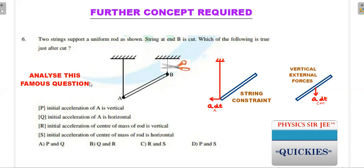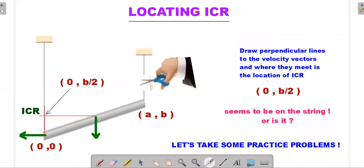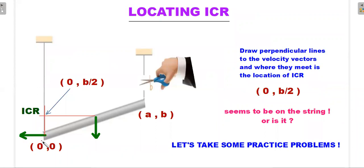Notice the two important velocity directions: point A has a horizontal (leftward) velocity, and the center of mass has a vertical velocity. To locate the ICR, I borrowed these velocity vectors of point A and the center of mass, drew perpendicular lines to each, and located the ICR at their intersection. Since end A is at (0, 0) and end B is at (a, b), the midpoint (center of mass) is at (a/2, b/2). The perpendicular lines intersect at (0, b/2) — that is the ICR.